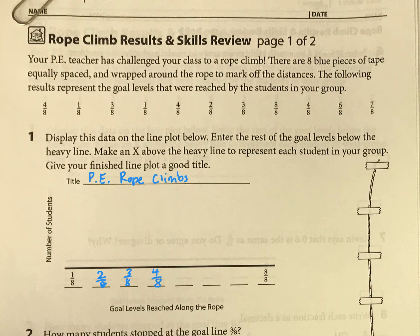Once we have that, we can start to put in our data. So one person did four eighths, so I'd make an X for that person. One person was one eighth, three eighths, there's another one eighth, and you're going to keep on going until you've filled in the line plot.